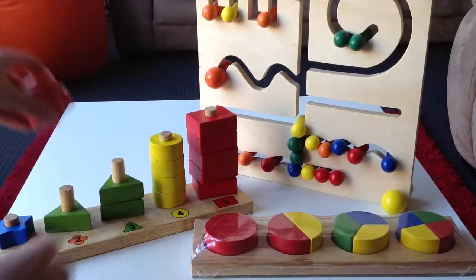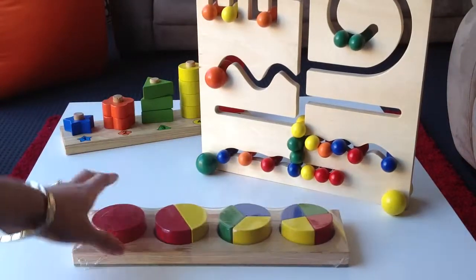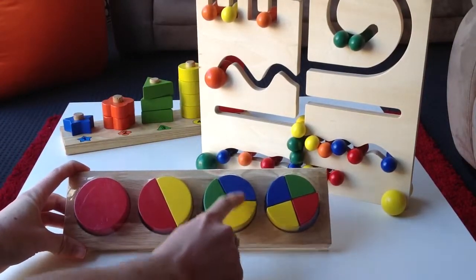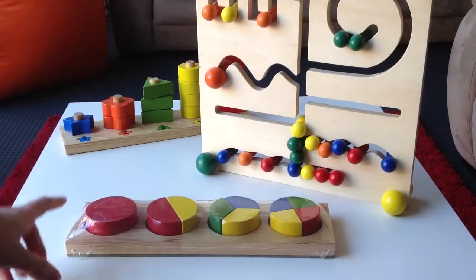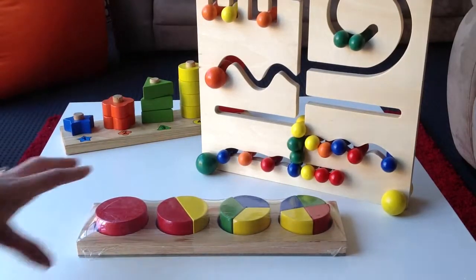Whoops. Anyway, you get the point. Okay, this one is a fractions tray. You can see there, you've got whole, two halves, three thirds and four quarters. So they all come out like a puzzle and you can put them back together as well as teaching your child the actual maths behind it.